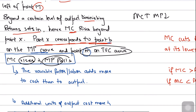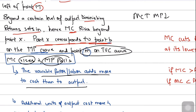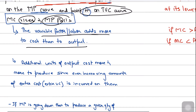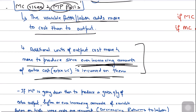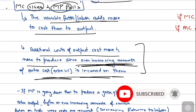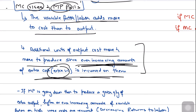The simple reason marginal cost rises and marginal product falls is that variable factors add more cost than they contribute to output. Each additional unit of labor contributes less and less extra output, and ever-increasing amounts of variable cost — wage cost — are incurred to produce additional units. That's what decreasing returns to labor is all about.